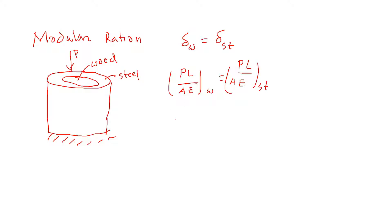Now P by A is sigma. So sigma L by E of wood is sigma L by E of steel. We can do this then. Sigma wood is equal to E modulus of elasticity of wood, modulus of elasticity of steel, and then sigma of steel.